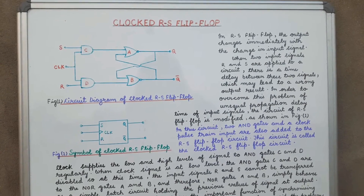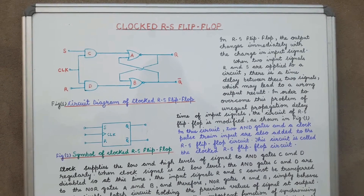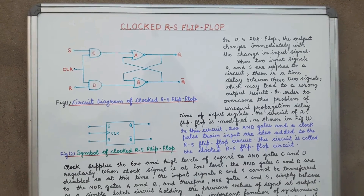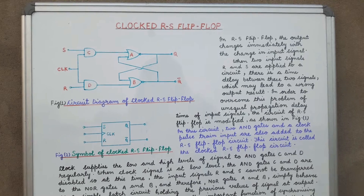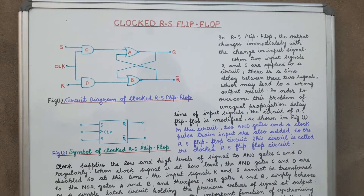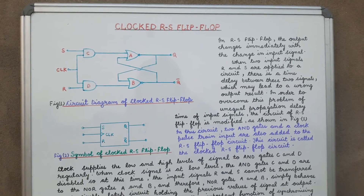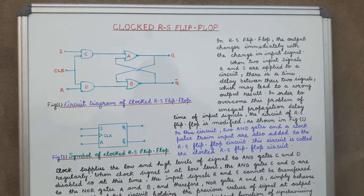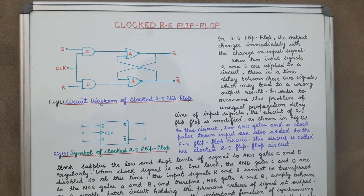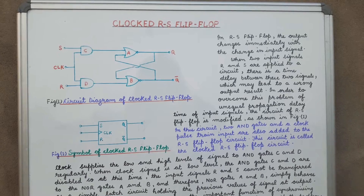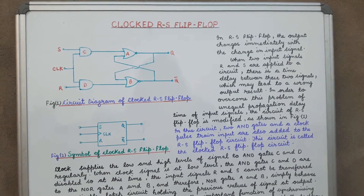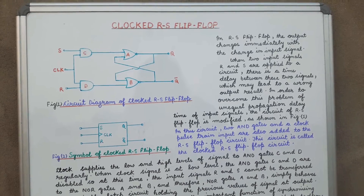The clocked RS flip-flop has two AND gates: AND gate C and AND gate D. The clock pulse is applied to both AND gates C and D. The outputs Q and Q-bar come from NOR gate A and NOR gate B respectively, with S and R as the inputs to AND gate C and AND gate D respectively, and CL — that is the clock pulse — is also applied.